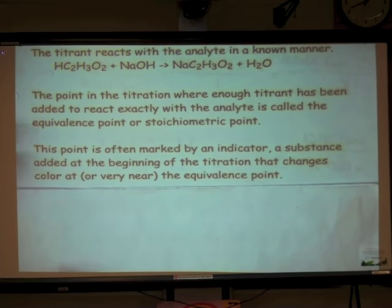And so, this point, this equivalence point, or stoichiometric point, is often marked by an indicator. A substance added at the beginning of the titration that changes color at or very near the equivalence point.